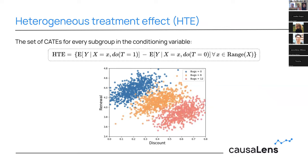The Heterogeneous Treatment Effect, or HTE, is essentially just a set of CATEs computed for every subgroup in the conditioning variable. It means computing a treatment effect for every subgroup in the data, where subgroups can be defined by any conditioning you choose — bugs faced, discount threshold, or combinations thereof.